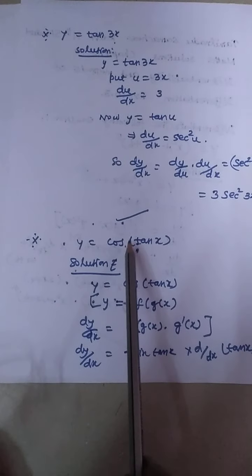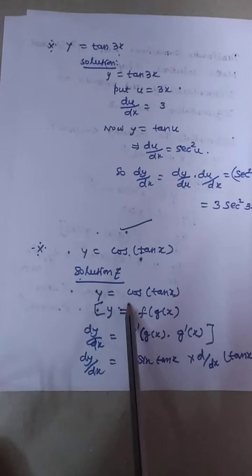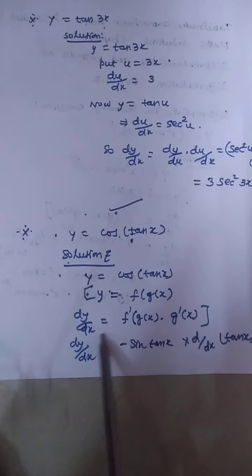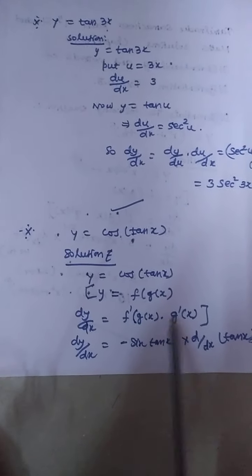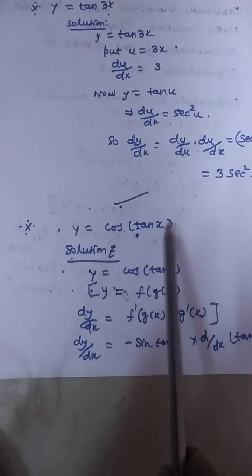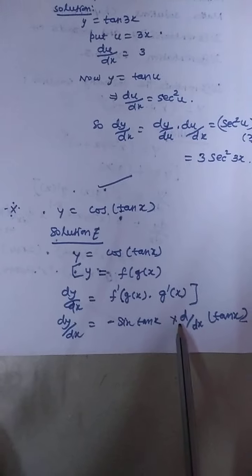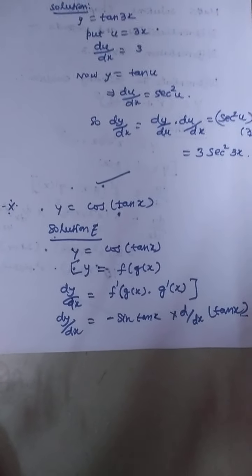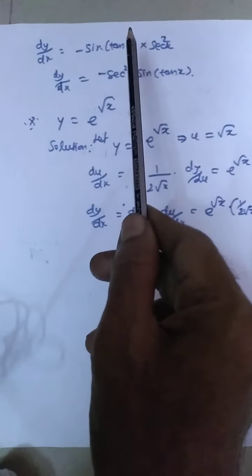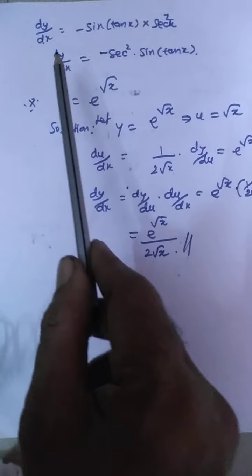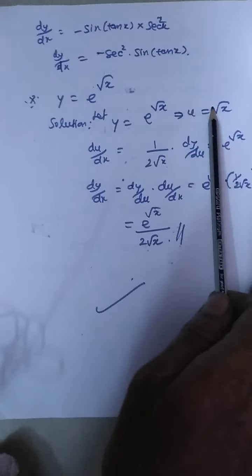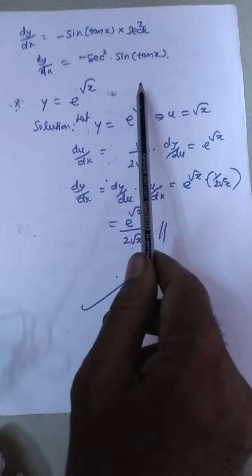Next, Question 3: y is equal to cos(tan x). Write y = f(g(x)) with g(x) = tan x. By the chain rule, dy/dx = f′(g(x)) · g′(x) = −sin(tan x) · sec²(x). Therefore dy/dx = −sec²(x)·sin(tan x).